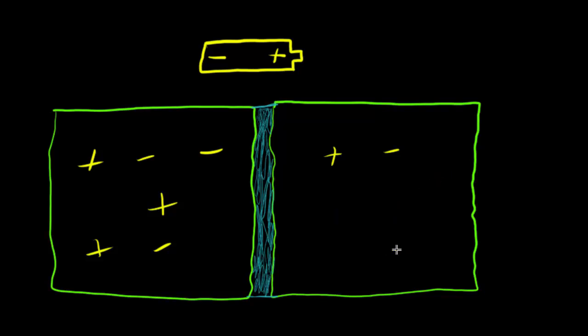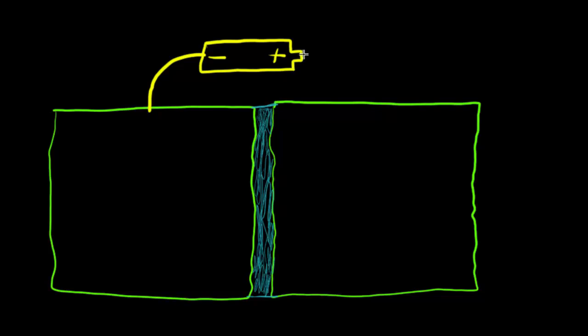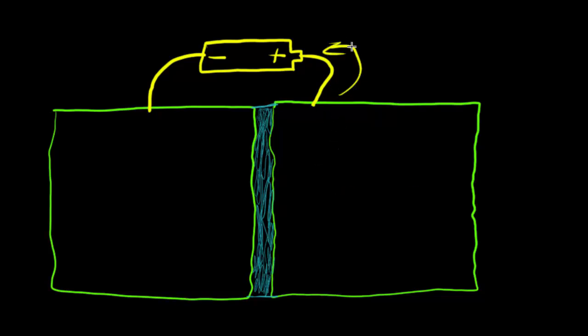What happens when we connect these plates to the battery? When we connected the capacitor to the battery, one plate was connected to the cathode and one to the anode. That caused any negative charges on one plate to flow out through the battery, leaving that plate mainly positively charged.